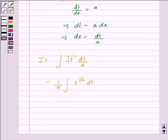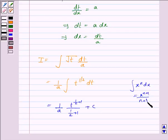Now, this is equal to 1 upon a integral of t to the power 1 by 2 is t to the power 1 by 2 plus 1 upon 1 by 2 plus 1 plus c, as integral of x to the power n dx is x to the power n plus 1 upon n plus 1 plus c.